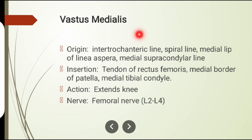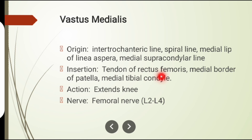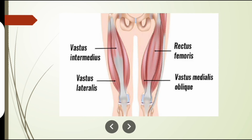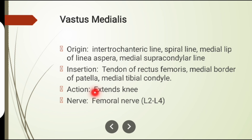The fourth muscle involved in knee extension is vastus medialis. Its origin is from the intertrochanteric line, spiral line, medial lip of the linea aspera, and medial supracondylar line. Its insertion is on the tendon of rectus femoris, medial border of the patella, and medial tibial condyle. Action: knee extension. Nerve supply: femoral nerve.